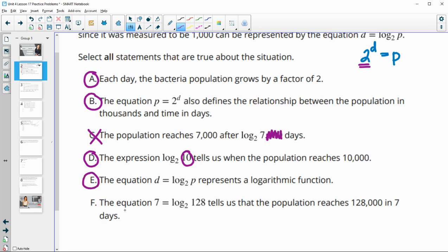The equation 7 equals log base 2 of 128 tells us when the population, when P reaches 128,000. Yes, we've got 128 in here, and remember it's in thousands in 7 days. So this is true.